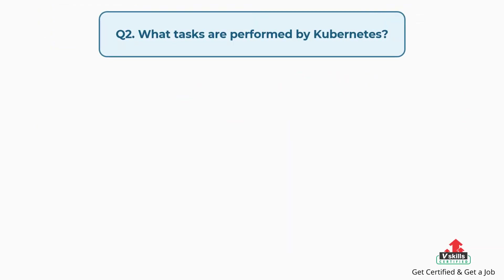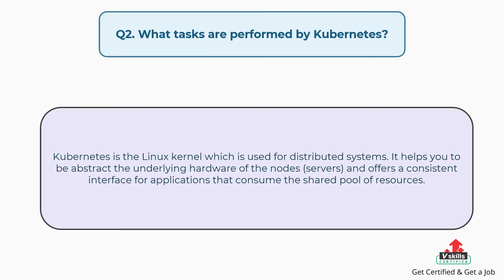Question number two: What tasks are performed by Kubernetes? Kubernetes is the Linux kernel that is used for distributed systems. It helps you to abstract the underlying hardware of the nodes and servers, and offers a consistent interface for applications that consume the shared pool of resources.